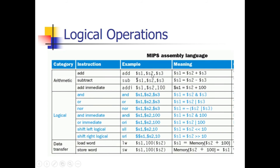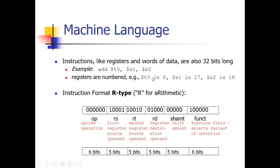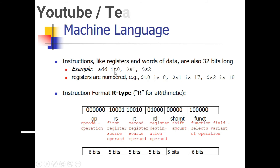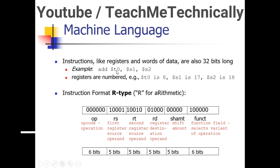We should not confuse this with the structure of the R-type instruction format, because in the R-type format we write RS first, then RT, then RD. However, when writing the assembly code, the first register is RD. So what we do is check what the register number of, say, t0 is — it is 8 — and since it is written first in the command, we know it is the destination register. We convert it to binary and place it at the location where RD is written.